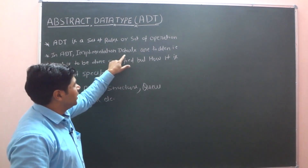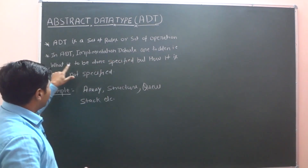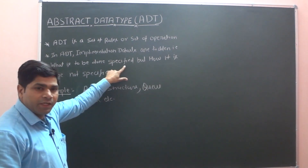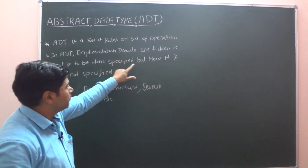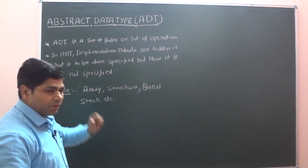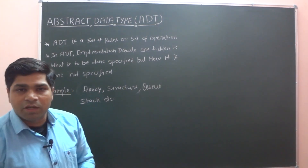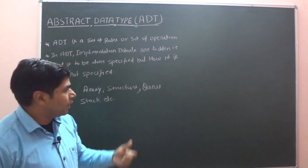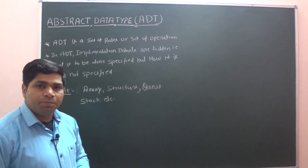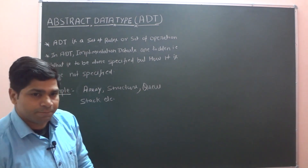Next, let us look at another definition: in ADT, implementation details are hidden. What is to be done is specified, but how it is done is not specified. There are many real-world examples that will help you understand abstract data type.